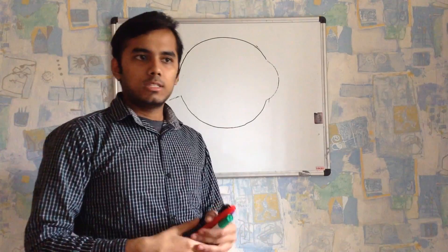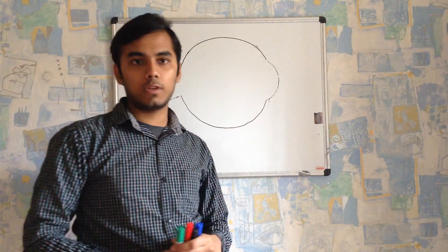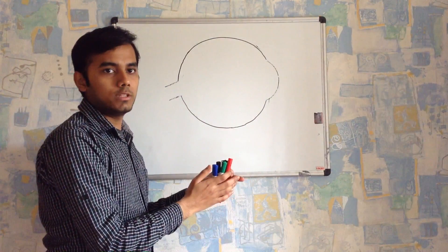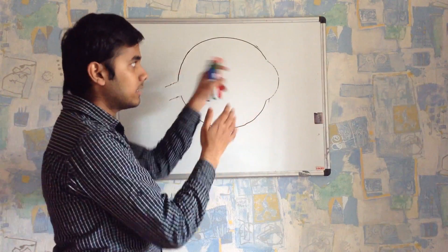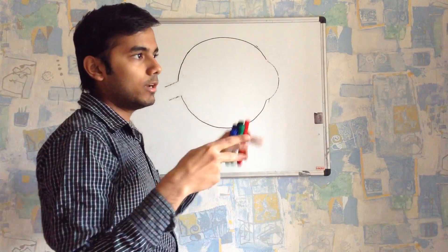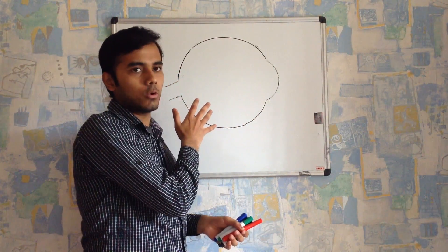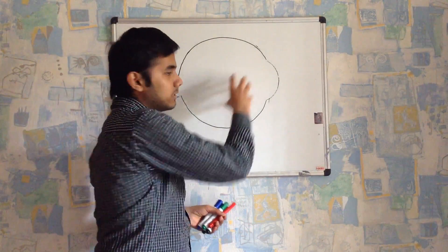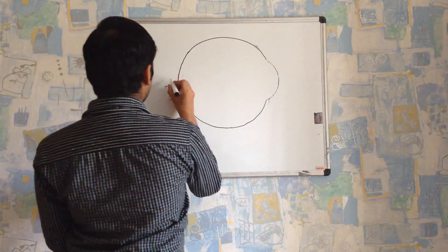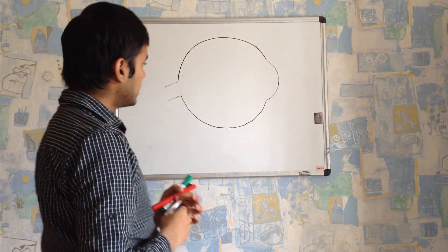Today we'll be discussing the structure of the eyeball. First, we'll cover the layers present within the eyeball and the structures present within the eyeball. We'll discuss the structure of the eyeball in two concepts: first, the layers of the eyeball, which we call the outline of the eyeball, and next, the structures present within the eyeball. There are actually three layers of the eyeball.